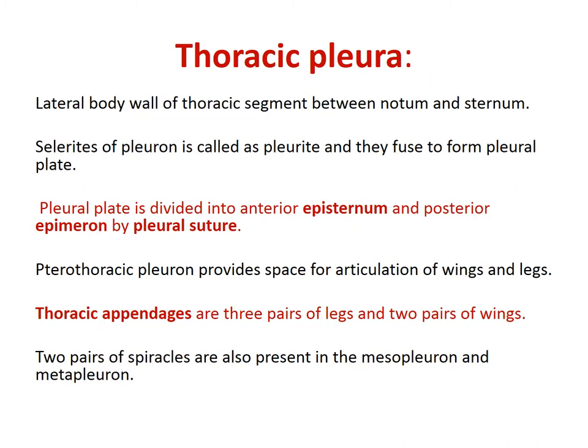The thoracic pleura: the lateral body wall of the thoracic segment lies between the notum and sternum. The sclerites of the pleura are called pleurites and they fuse to form the pleural plate. The pleural plate is developed from the episternum and the posterior epimeron by a pleural suture. The pro-thoracic pleuron provides space for articulation of wings and legs. Thoracic appendages are three pairs of legs and two pairs of wings. Two pairs of spiracles are also present in the meso-pleuron and meta-pleuron respectively.